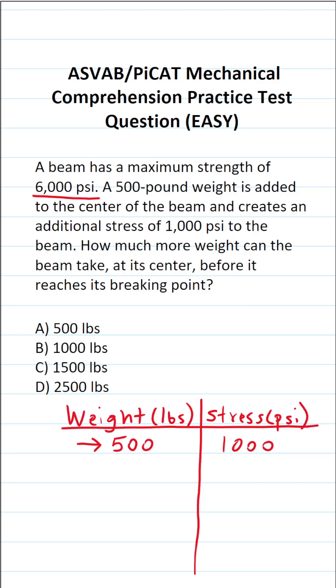So all we're going to do is increase our weight by 500 pounds until we reach 6,000 PSI. So if we add 500 pounds to 500 pounds, that gives us 1,000 pounds of weight on the beam. And that corresponds to 2,000 PSI of stress on the beam. Let's add 500 more pounds. That brings us up to 1,500 pounds of weight. That corresponds to 3,000 PSI of stress on the beam.